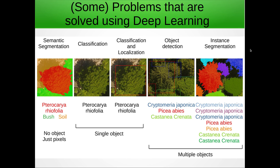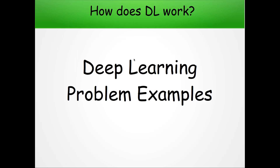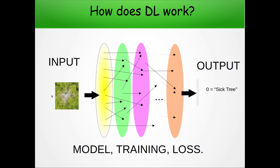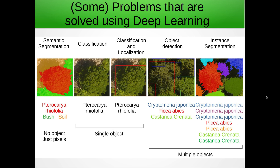Let's begin with the problem of semantic segmentation. Here in this slide you have several of the problems that can be solved. The problem before was called image classification — we have several images and for each image we classify it into one class. In that problem we said that we could have either sick, dead, or healthy trees. For each piece of data, we assign one label among the different possible labels. That's called image classification.